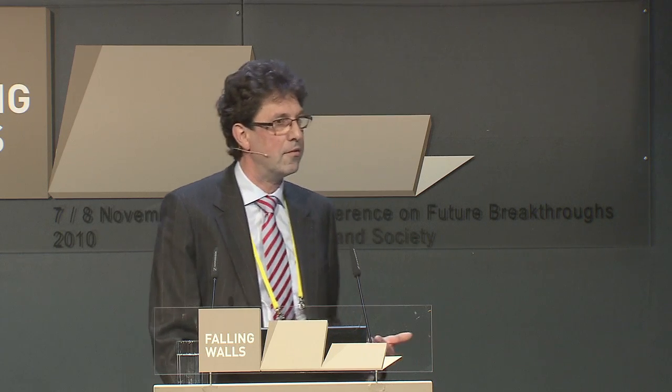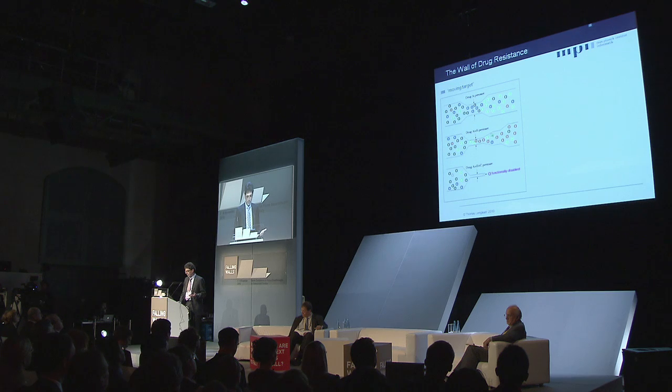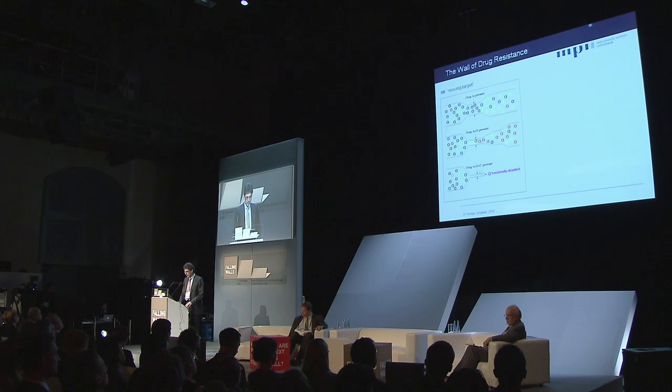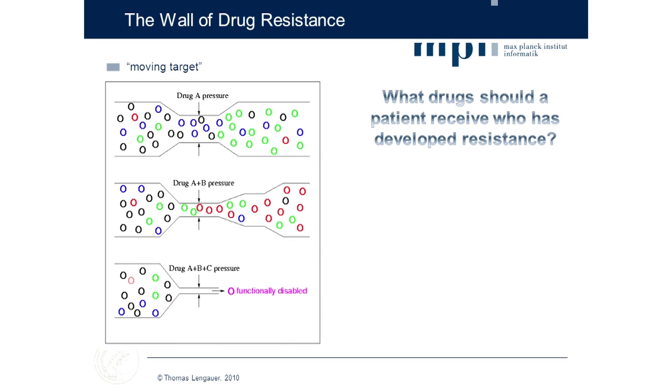A measure against that could be to administer another drug B that specifically targets the green variant. Now the barrier for the virus to break through into resistance is higher, because the drugs cover a broader spectrum of viral variants. But we still have a strong minority — the very rare red variant — which eventually breaks through because it is resistant against both drugs. The optimal picture would be a drug combination that catches all variants; this is utopia. The virus will always win in the end — the only thing we can do is make that end as far in the future as possible.